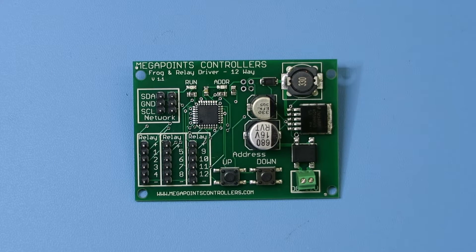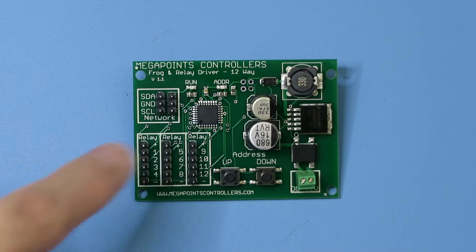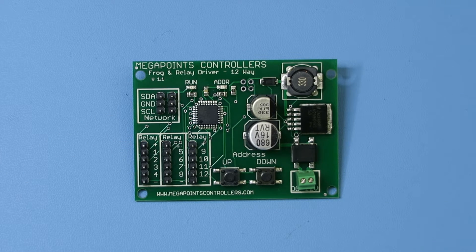You can use this board for a variety of different purposes including switching frog polarity in conjunction with our servo controller or for general relay switching duties. It's designed to sit on the Megapoint's network, you can give it its own address or you can share an address with a servo controller so that the 12 relay outputs perfectly match the 12 outputs of a servo controller giving you automatic frog polarity switching.